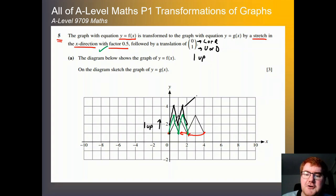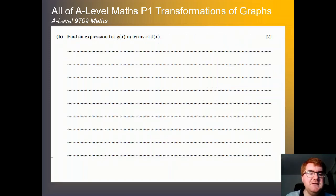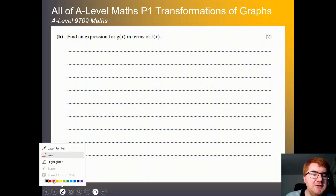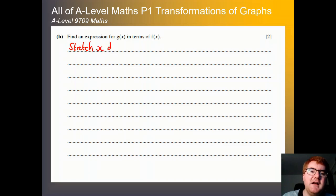Doing it in two stages means you'll make fewer mistakes. Then we get our function — I'm going to label this clearly for the examiner: y equals g of x. Now we need to find an expression for g of x in terms of f of x. We had a stretch in the x direction first, and that's with the factor of 2.